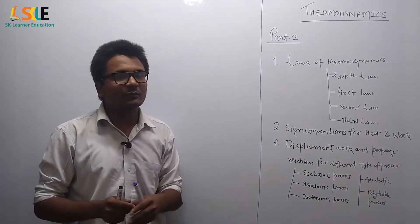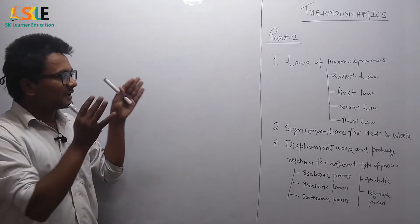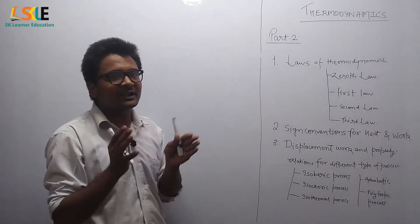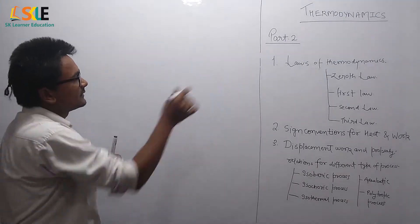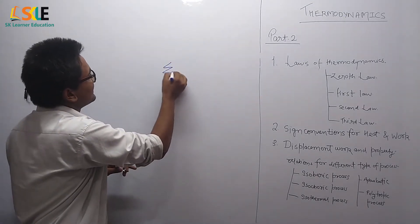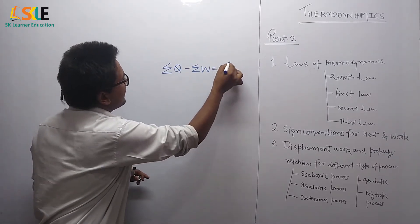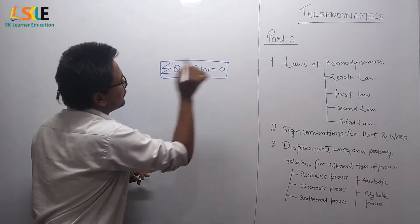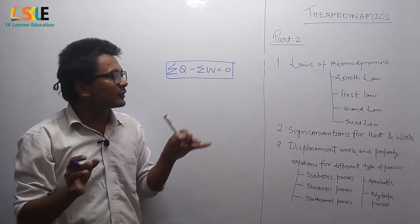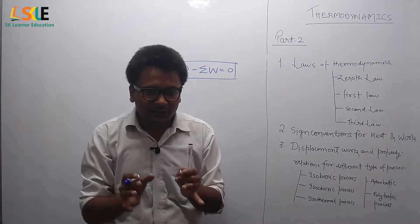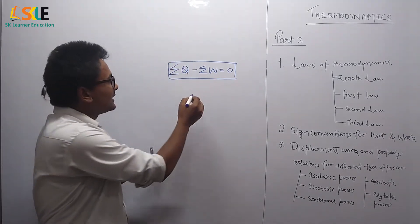Now we will see the first law of thermodynamics. The statement of the first law says that the algebraic sum of net heat and work interactions in a cyclic process is zero. We can mathematically represent this as: net heat and net work interactions in a cyclic process equal zero. When these net heat and work interactions in a cyclic process are zero, a new property evolves, and that new property is internal energy.